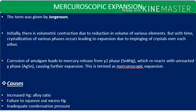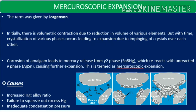Now, mercuroscopic expansion. The term was given by Jorgensen. Initially there is volumetric contraction due to reduction in the volume of various elements. But with time, crystallization of various phases occurs, leading to expansion due to impinging of crystals over each other. Corrosion of amalgam leads to mercury release from the gamma 2 phase — the tin mercury phase — which re-reacts with the unreacted gamma phase, the silver tin phase, causing further expansion. This is known as mercuroscopic expansion.